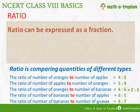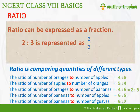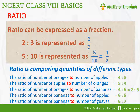Ratio is also expressed as fractions. So if 2 is to 3 is given, it can be represented as 2 by 3. Similarly, 5 is to 10 can be represented as 5 by 10, where the colon is replaced by the division symbol, and 5 by 10 is further simplified into 1 is to 2.